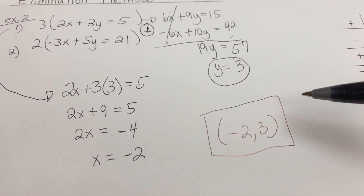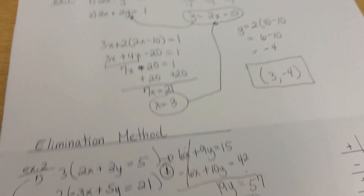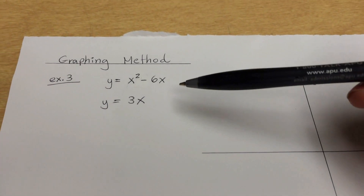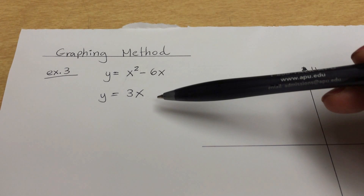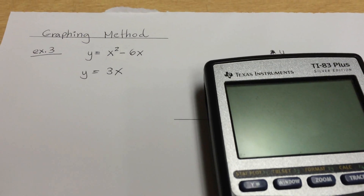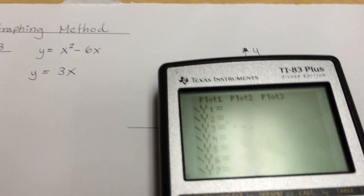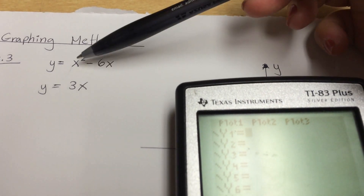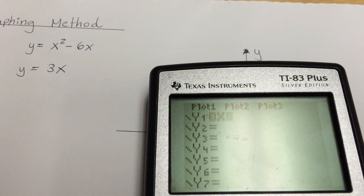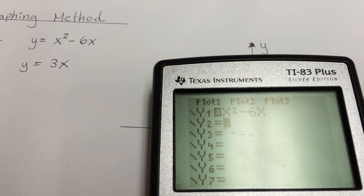The reason we write answers in coordinate form ties into method number 3 — the last method we're learning today — which is called the graphing method. We take a system of equations and actually graph it out using the calculator. Press y equals. The equations are already set up as y equals, so we plug them in: y equals x squared minus 6x for the first equation, and y equals 3x for the second.